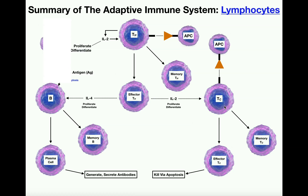For cytotoxic T cells to become activated and proliferate and differentiate into memory and effector cytotoxic T cells, they need two things: one, they need an antigen presented to them so they know what to attack; and two, they need to receive the signal of interleukin-2 from the generals — the effector helper T cells.